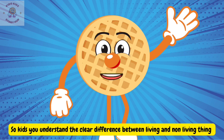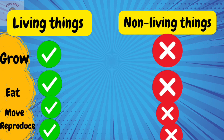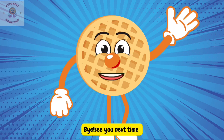So kids, do you understand the clear difference between living and non-living things? Here it is: living things grow, eat, move, and reproduce, while non-living things do not grow, eat, move, or reproduce.